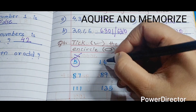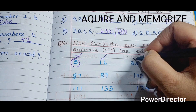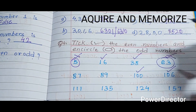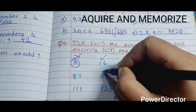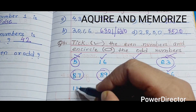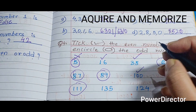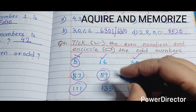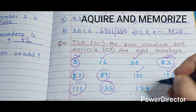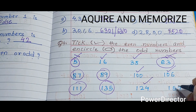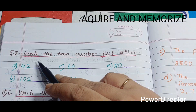We tick the even numbers and circle the odd numbers. Some numbers given are even and some are odd. For example, 115 is odd, 111 is odd, 135 is odd, 124 is even, and 157 is odd.